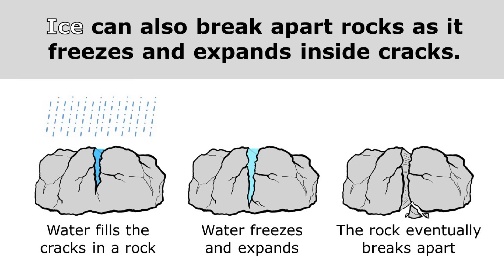Ice can also break apart rocks as it freezes and expands inside cracks. If it rains, water can fill in the cracks in a rock, and then at night it gets cold enough for that water to freeze. When water freezes, it expands, and so it can push on the sides of the rock and actually make those cracks a little bit bigger. In the daytime, it gets warm enough for that ice to melt and thaw, and at night when it freezes again, it can expand a little more. Eventually, that ice can break the rock apart and weather it, causing it to break into smaller pieces.